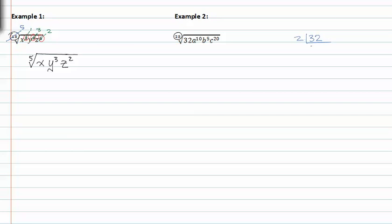If we prime factor thirty-two, we get two to the one, two, three, four, five.